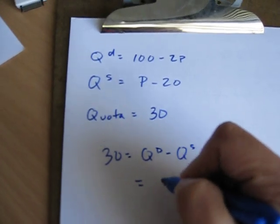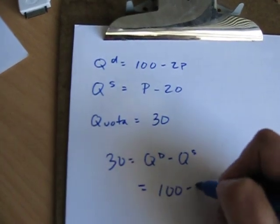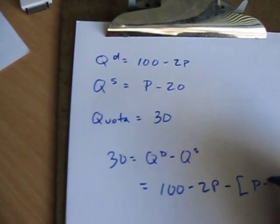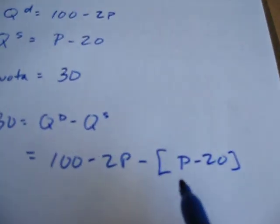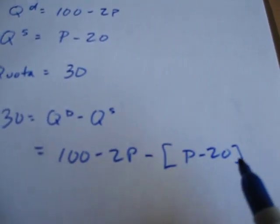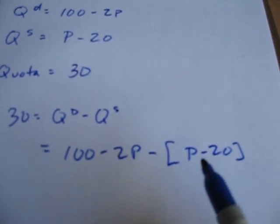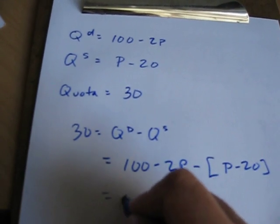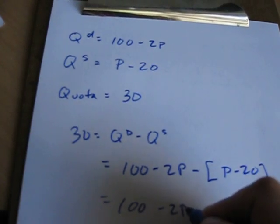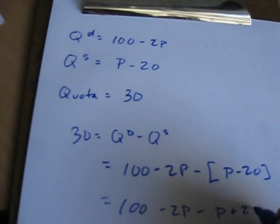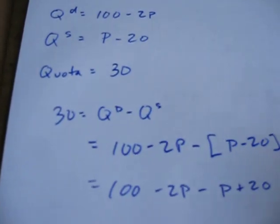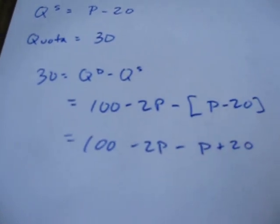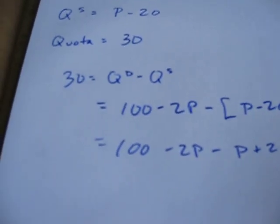We've got formulas for these. Quantity demanded is 100 minus 2p. Quantity supplied is p minus 20. Notice these brackets here — they're critical, because otherwise you're going to make a sign error right there. Getting rid of the brackets: 100 minus 2p minus p plus 20. You want to keep track of that negative — a negative and a negative makes a positive. That's where most math errors come from.